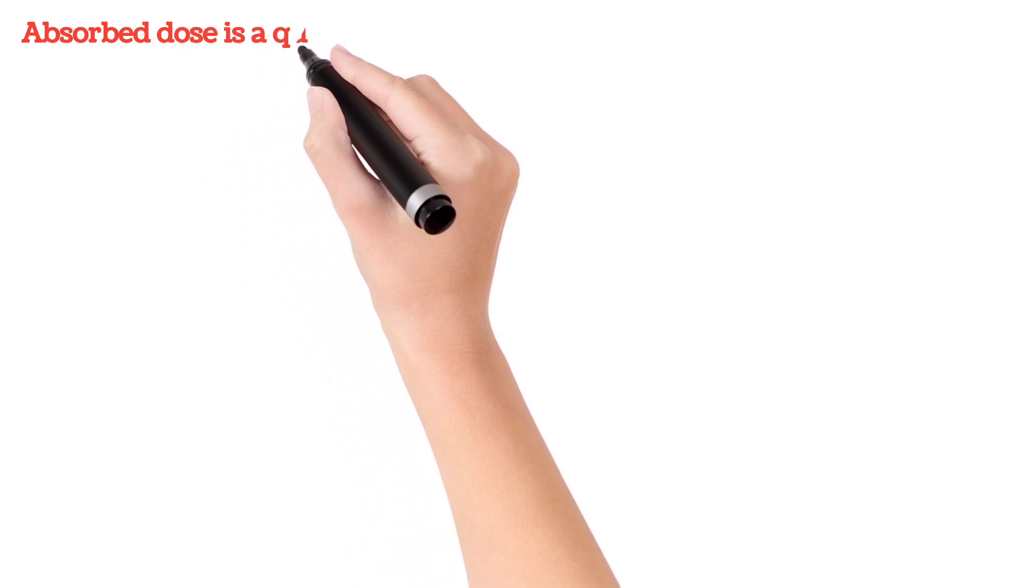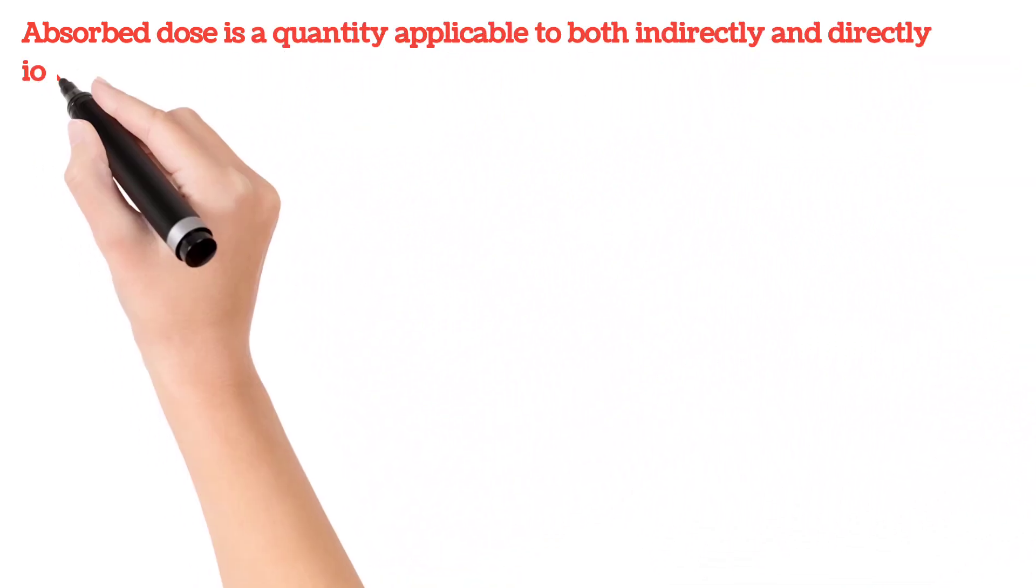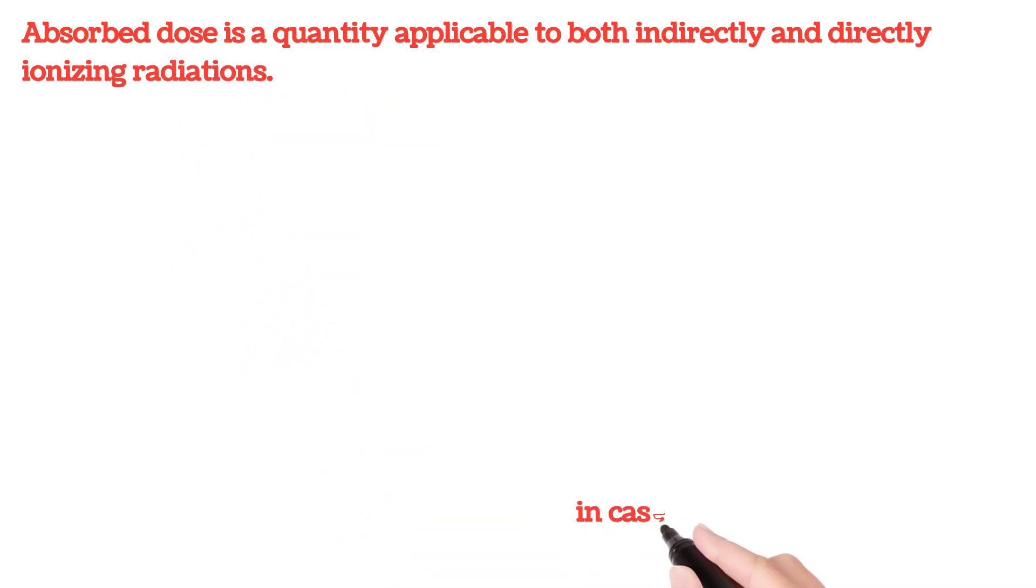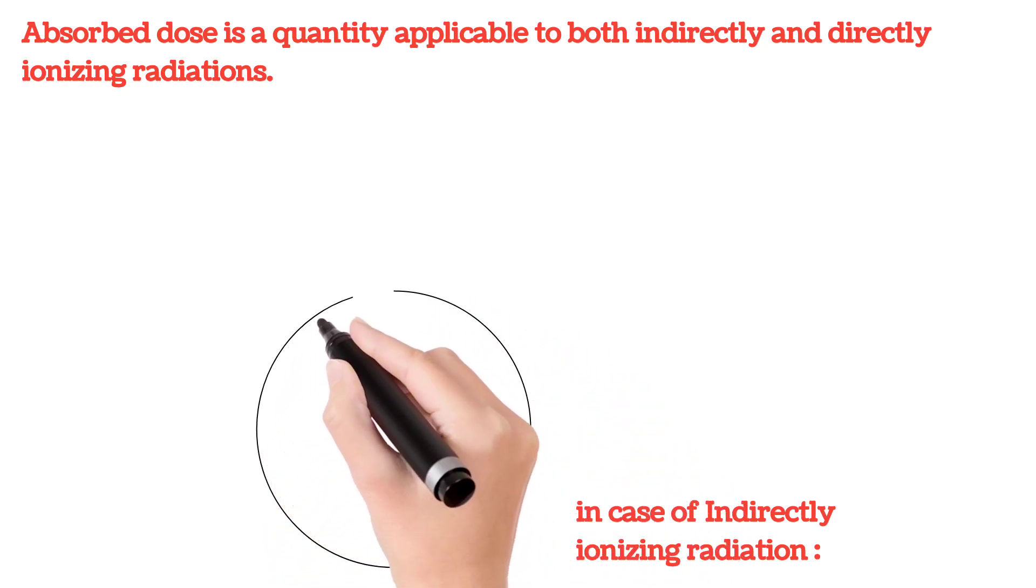Absorbed dose is a quantity applicable to both indirectly and directly ionizing radiations. In case of indirectly ionizing radiation, the energy is imparted to matter in a two-step process.